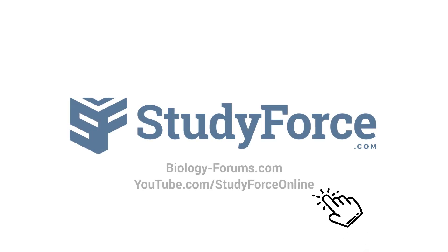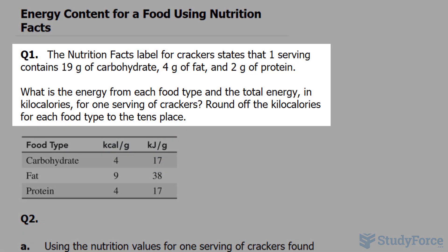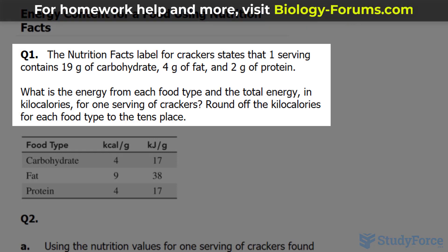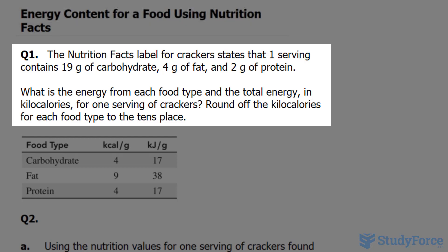In this lesson, we'll discuss how you can extract information from a nutrition label. The question reads, the nutrition facts label for crackers states that one serving contains 19 grams of carbohydrates, 4 grams of fat, and 2 grams of protein. What is the energy for each food type and the total energy in kilocalories for one serving of crackers?